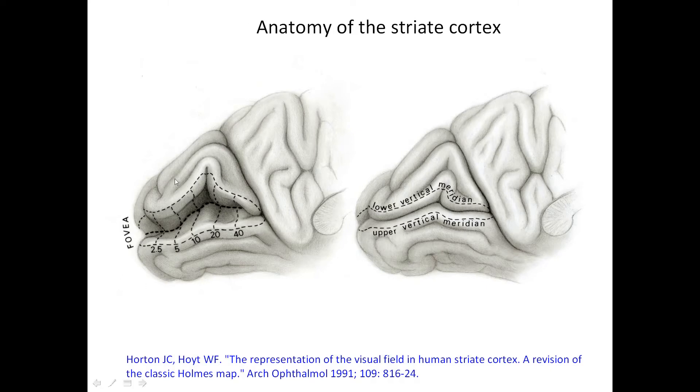This is the medial view on one of the hemispheres and this is how the information from our retina is projected in the sense of eccentricities. The more central information is, the more caudal is the projection, and the peripheral pieces of our visual field go to the depths of the brain.